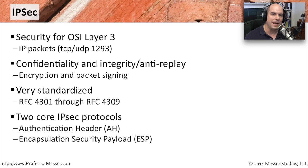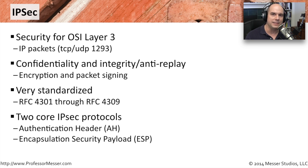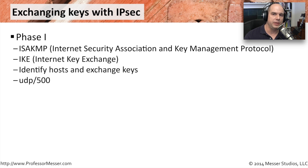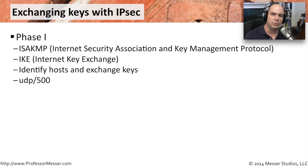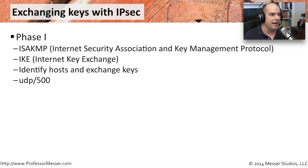There are two core protocols within IPsec: the Authentication Header (AH) and Encapsulation Security Payload (ESP). One challenge is making sure both sides use the same keys without sending key information over the network. There are two phases in setting up IPsec communication. Phase one uses the Internet Security Association and Key Management Protocol (ISAKMP), often called Internet Key Exchange (IKE), running over UDP port 500, where both sides identify themselves and exchange keys.